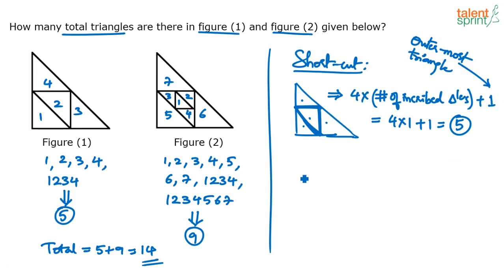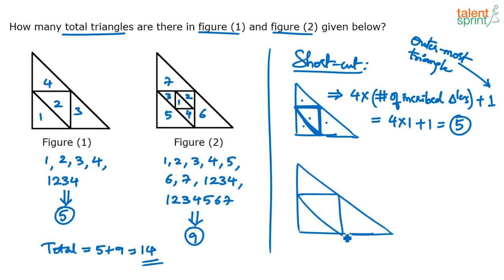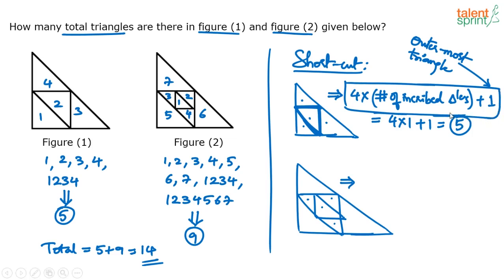For figure 2, there are 2 triangles inscribed — the first one and then the second one. So using the same formula: 4 × 2 + 1 = 8 + 1 = 9 triangles.